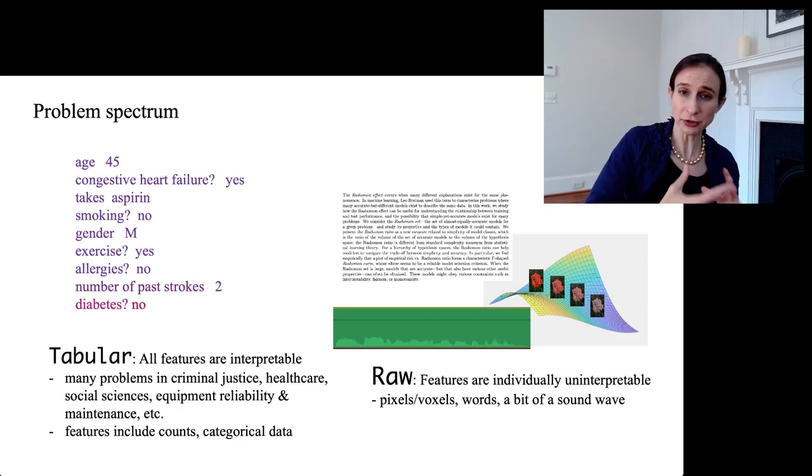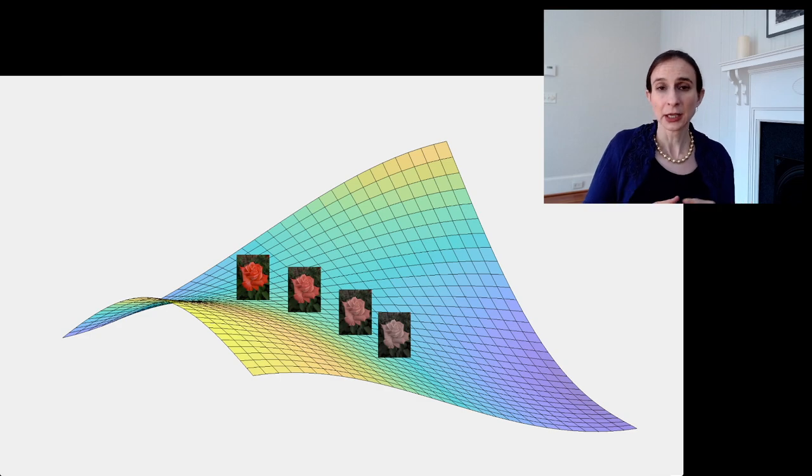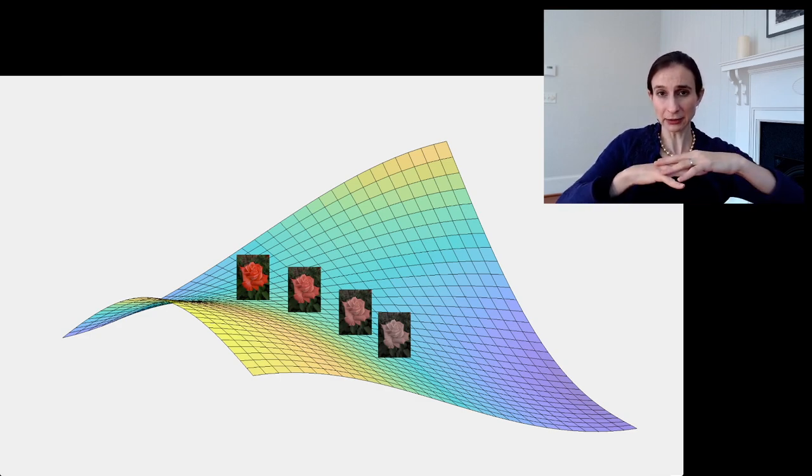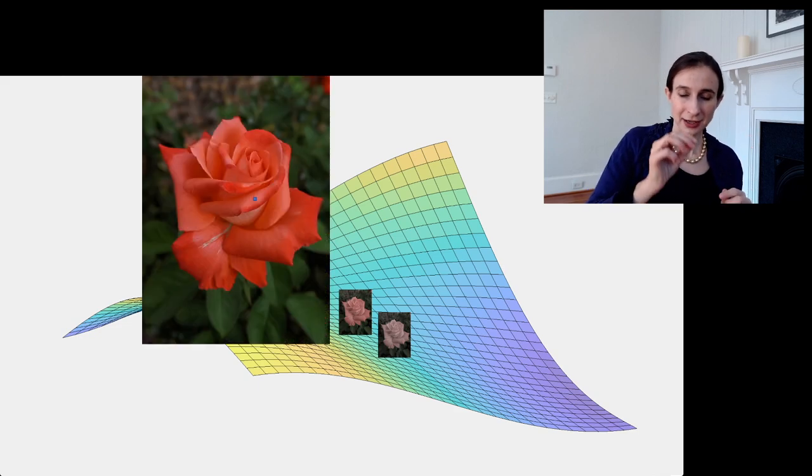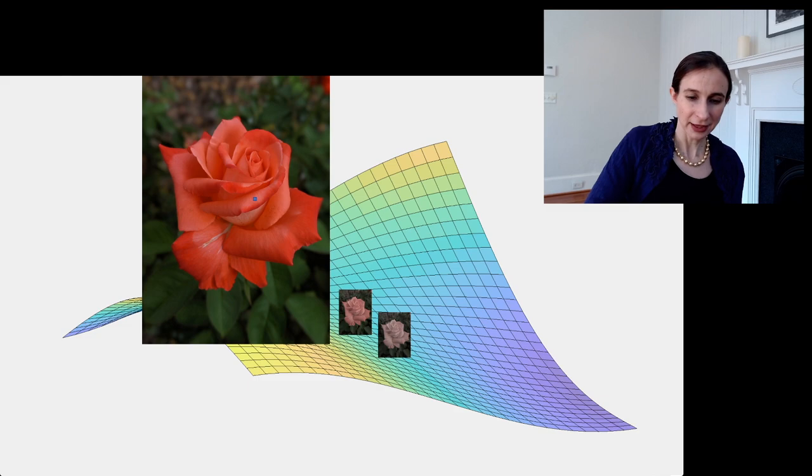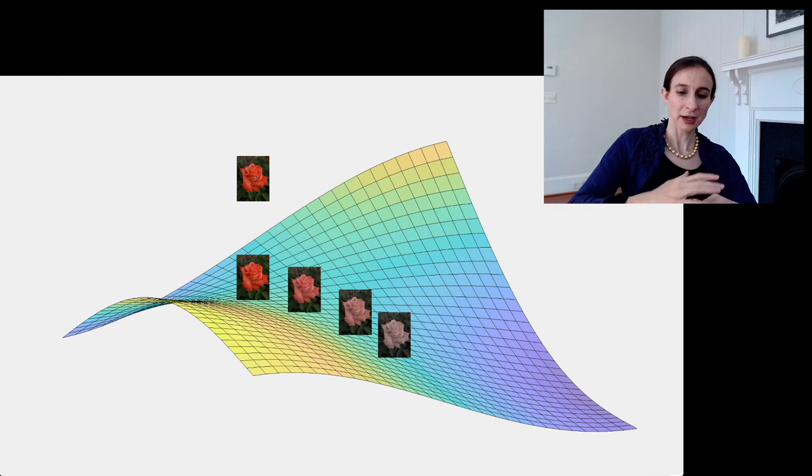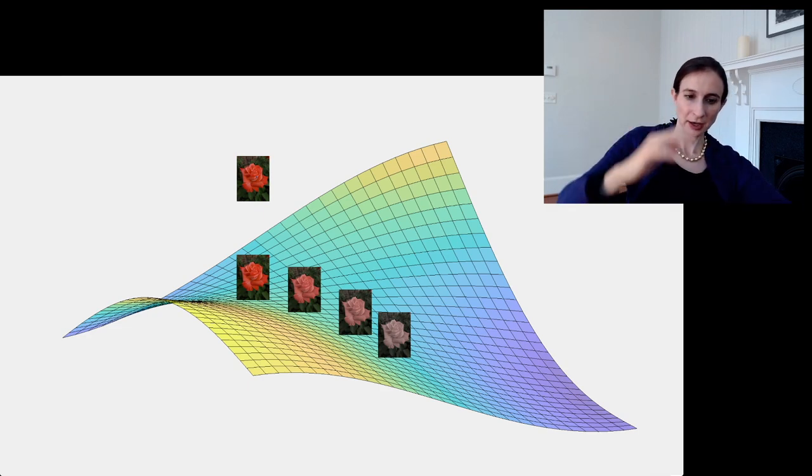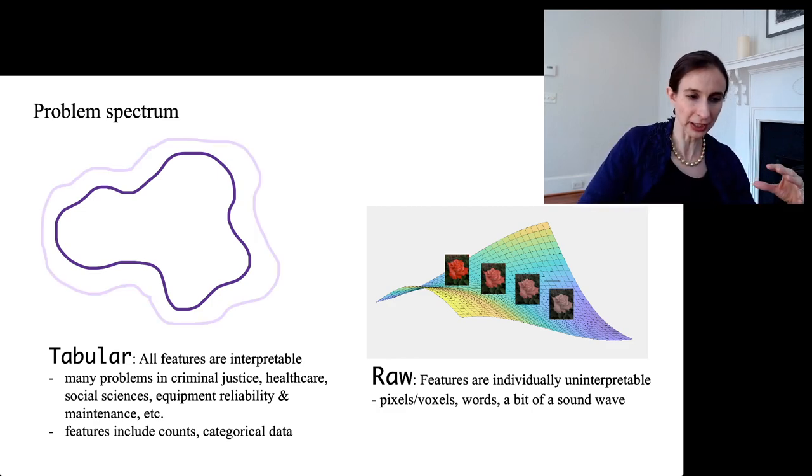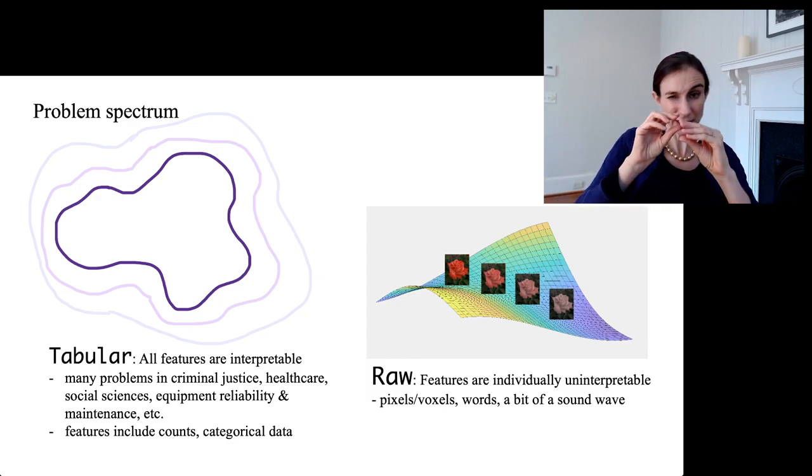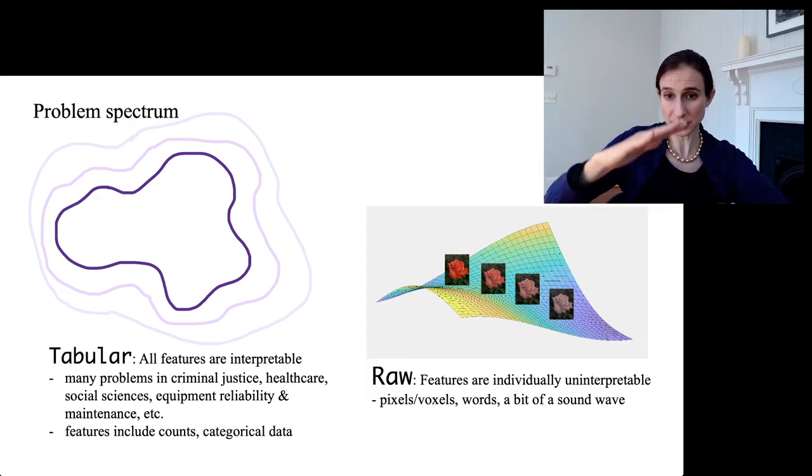And you can change the features fairly dramatically and still it would seem fairly realistic. Whereas with raw data, it's not really like that. With raw data, if you go off the manifold too far, then you get to things that are completely unrealistic. So for instance, if I take one pixel of an image and change it, like here I've made it blue, then that image is no longer on the manifold of realistic looking images. So the density fades gradually as you get further away from the manifold. So for tabular data, I like to think of the density as kind of blobby looking and kind of fading out gradually. Whereas for the raw data, like I said, I think the density fades out fairly close to the manifold.